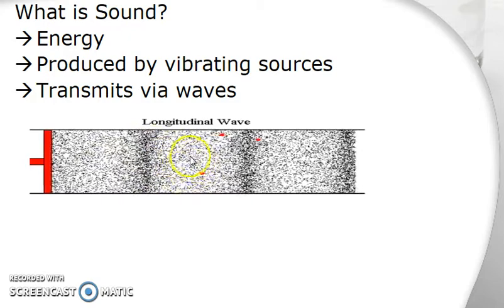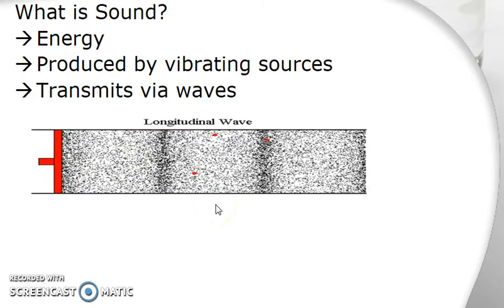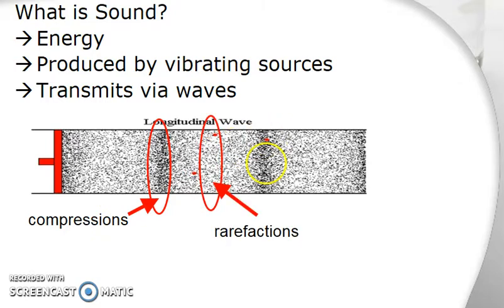If I could just freeze it, these regions where the air particles are very concentrated are known as compressions. And regions in between, where the air particles are very far apart, much further apart than the compressions, are known as rarefactions.